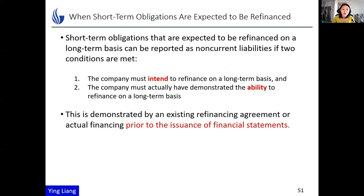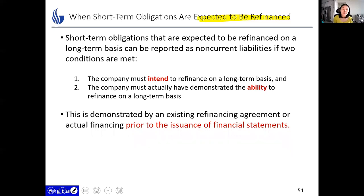There's another situation when short-term obligations are expected to be refinanced. For example, if you have a 10-year loan in its final year that would normally be reclassified as current, but the company expects to refinance it — either by extending the loan or issuing shares to pay it back — then the company can still classify it as non-current liability.